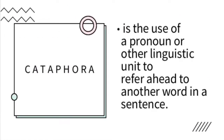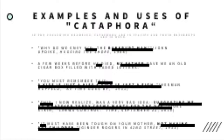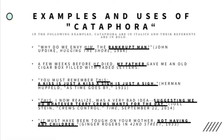So first is cataphora. Cataphora is the use of a pronoun or other linguistic unit to refer ahead to another word in a sentence. Here are some examples of cataphora. In the following examples, cataphora are in italics and their references are in bold.